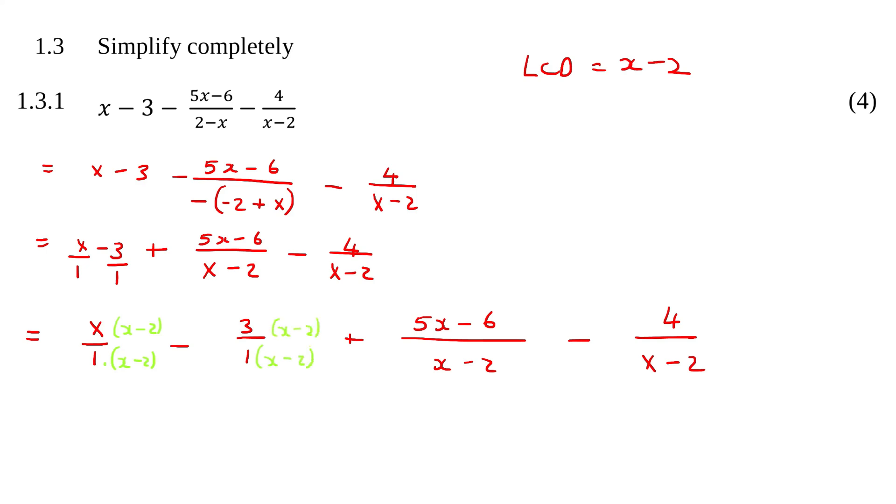Now what some learners like to do is they combine these two together and just multiply both of those by x minus 2. That's also fine. So what we're going to end up with now is x times x minus 2 over x minus 2 minus 3 times x minus 2 over x minus 2 plus 5x minus 6 over x minus 2 minus 4 over x minus 2.